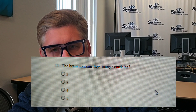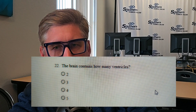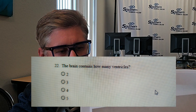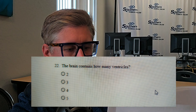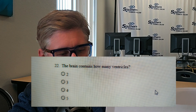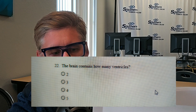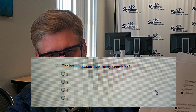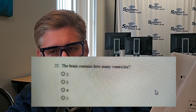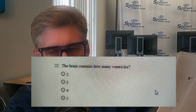Moving on to the second question. The brain contains how many ventricles? Is it two, three, four, or five? Put your answers in the comments section. If you can answer further — how many ventricles we have, what produces CSF, and where that is located in which ventricle — that would be great. That was question number two.